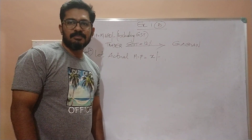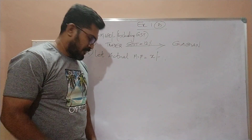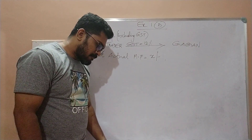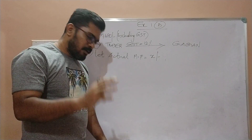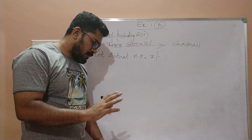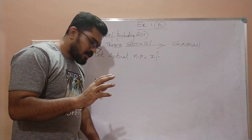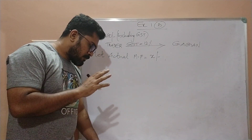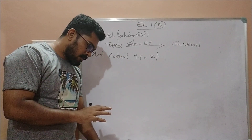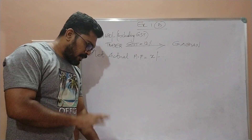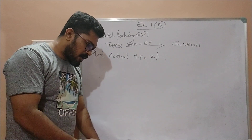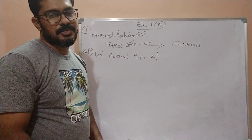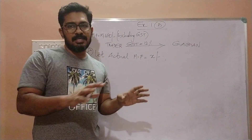I am ready with the last sum of this exercise, which is question number 11. For a trader, the marked price of a refrigerator is 15,680, inclusive of GST at a rate of 12%. Gagan, who is a customer, asked the trader to reduce the price to such an extent that its reduced price plus GST on it equals the marked price. We have to find the required reduction.